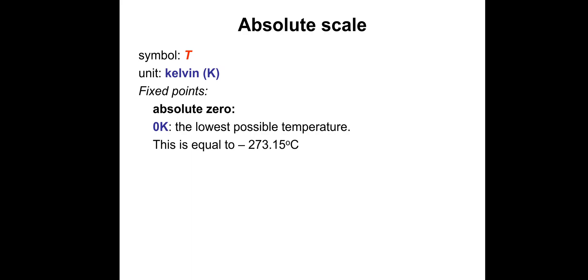Absolute scale. Symbol: T. Unit: Kelvin. Some fixed points. Absolute zero: zero Kelvin is the lowest possible temperature in the universe, equal to minus 273.15 degrees Celsius.